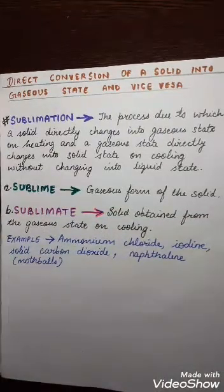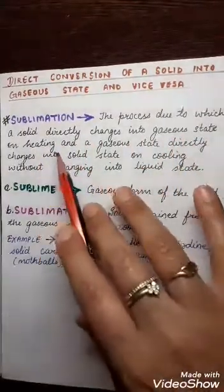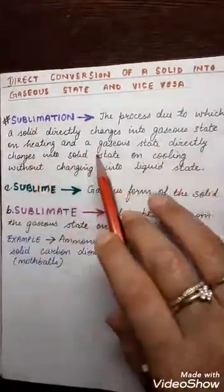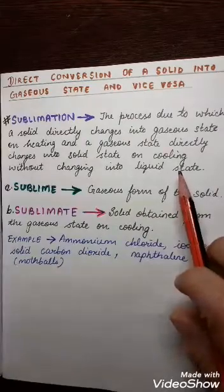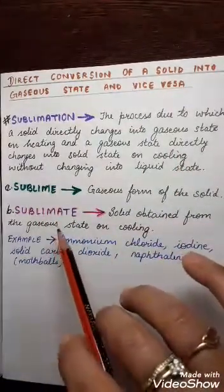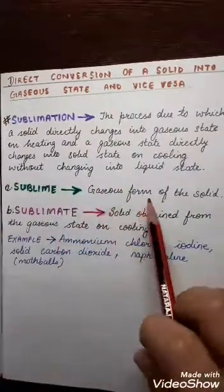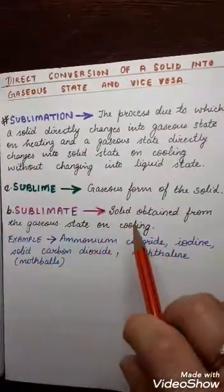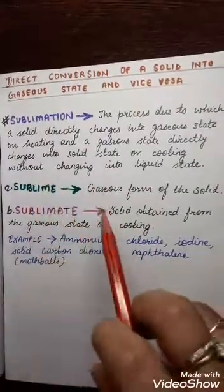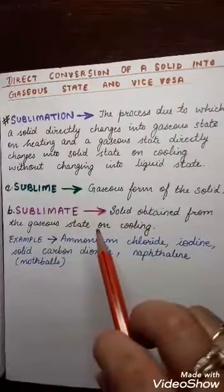Sublimation is a process by which a solid directly changes into a gaseous state on heating, and a gaseous state directly changes into a solid state on cooling, without changing into a liquid state. There are two important terms: 'sublime' — the gaseous form of the solid — and 'sublimate' — the solid obtained from the gaseous state on cooling. Please remember these two terms.